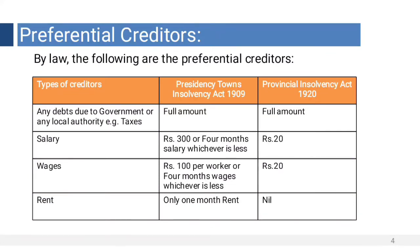Types of creditors: Any debts due to the government or any local authority — for example, taxes and rents — in presidency terms, full amount should be paid, and in provisional also full amount should be paid. In case of salary, Rs. 300 or 4 months salary, whichever is less.